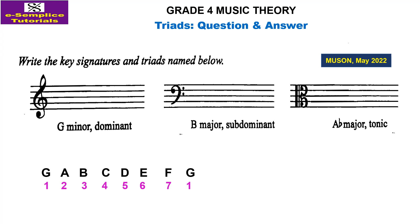Let's start with G minor dominant. The first thing is to write out the notes in G minor. Add the key signature accidentals, which are B flat and E flat. Because it is a minor key, raise the seventh note, so F becomes F sharp. We are looking at a dominant triad, and dominant means the fifth degree will be at the root.